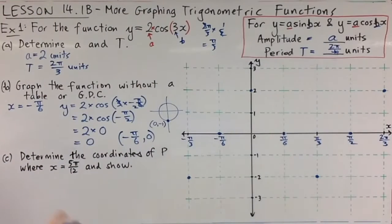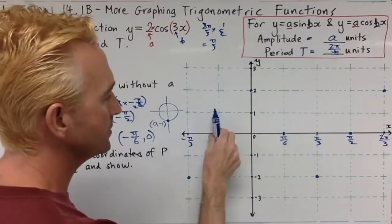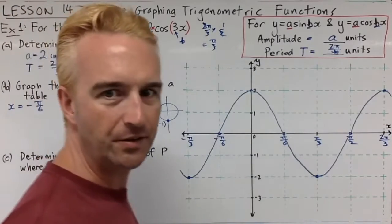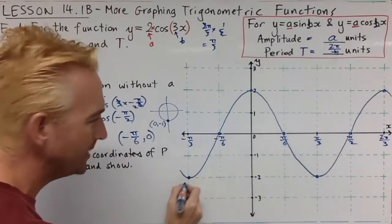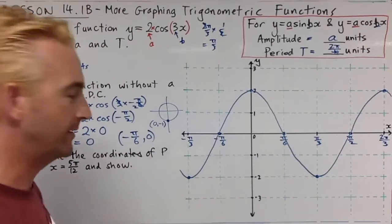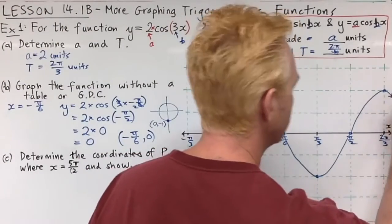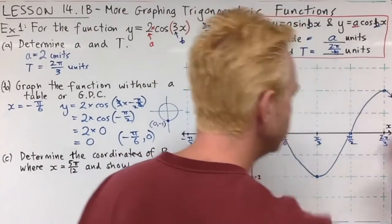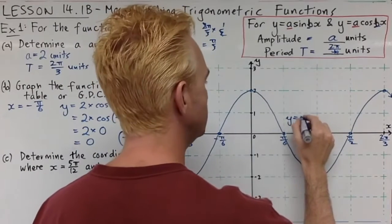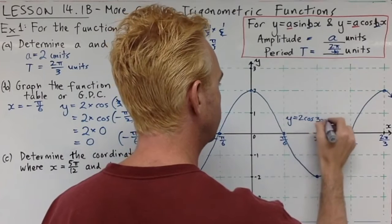Knowing all that, let's now graph this with a nice smooth line — it crosses the axis at a nice angle, not vertically. At the ends we put arrows because the wave pattern keeps going in both directions. We label the equation y equals 2 cos 3x.